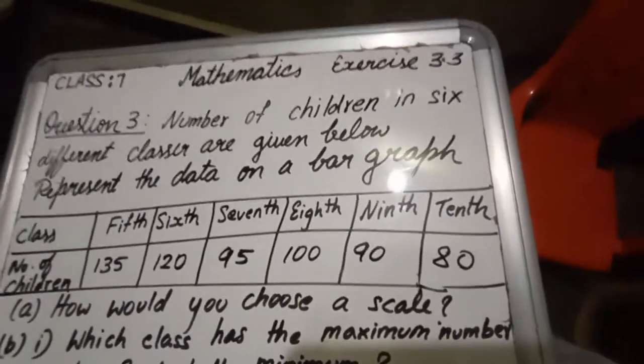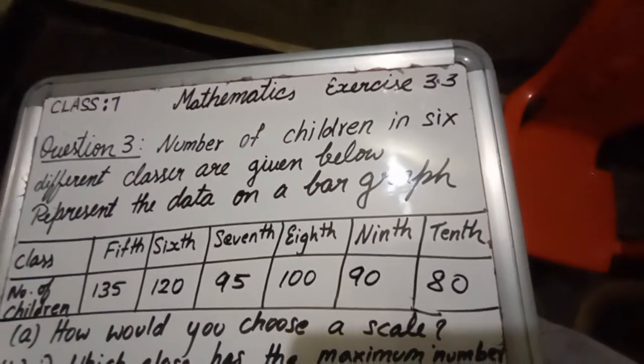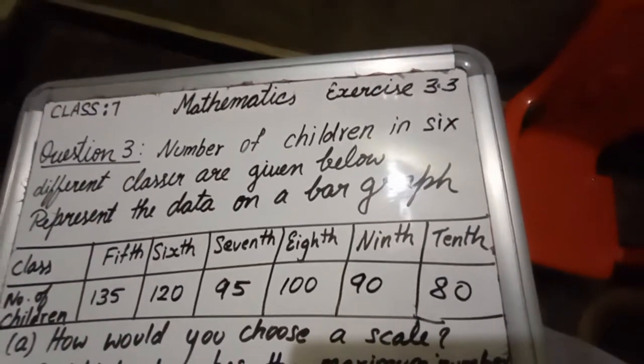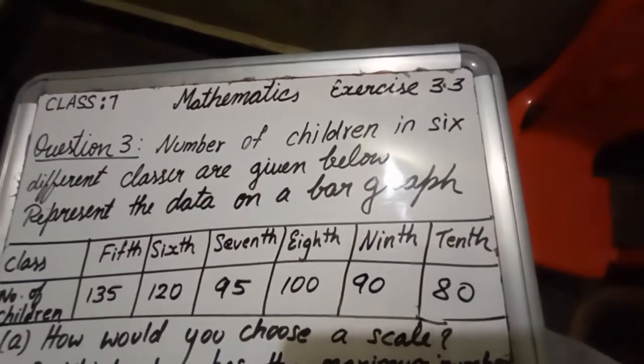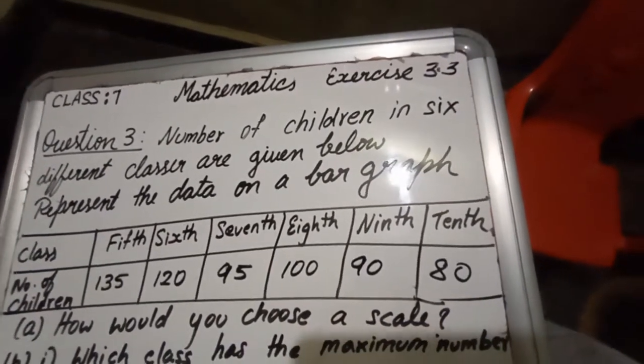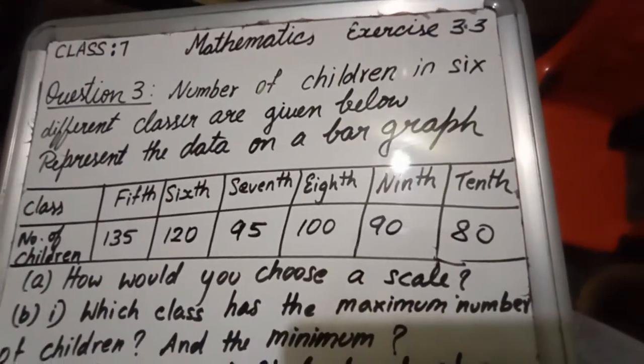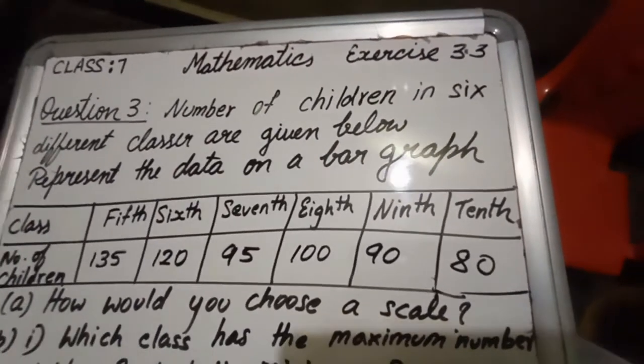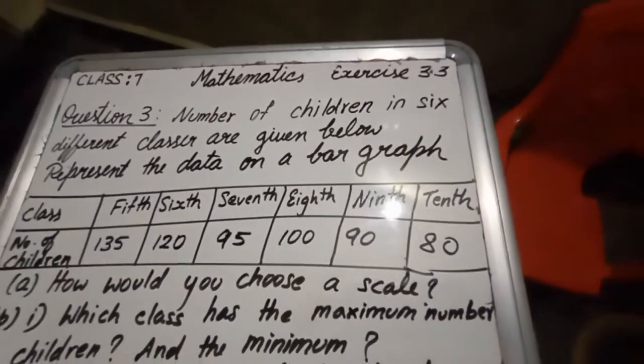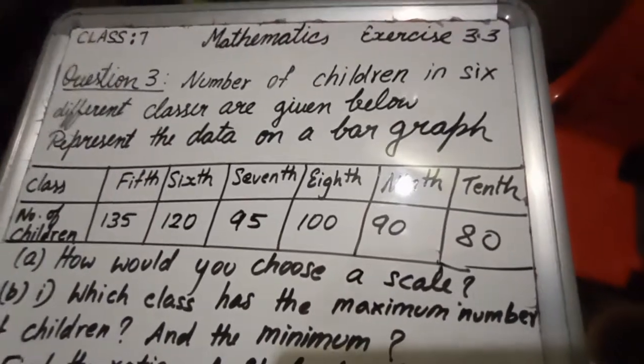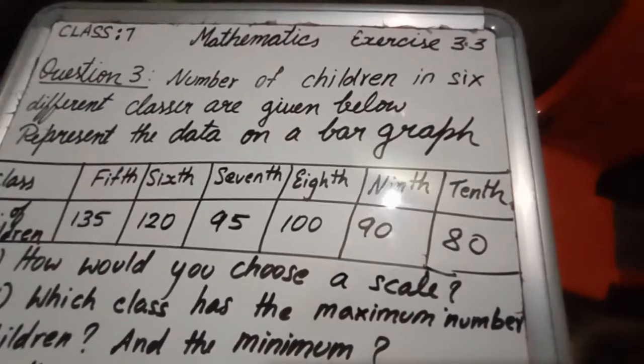Number of children in 6 different classes are given below. The information is given below. You have to represent this data on a bar graph. The table is given: class, different classes and number of children. First they have asked you one sub question: what would you choose as a scale? You have to observe the data. By seeing the data you will understand what scale you have to use.